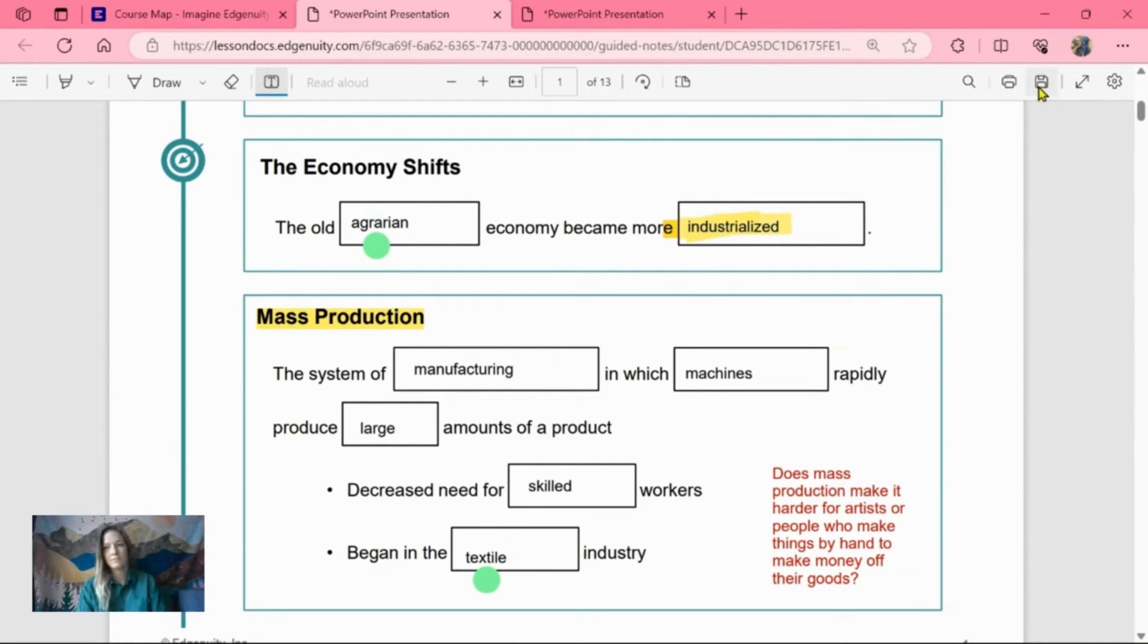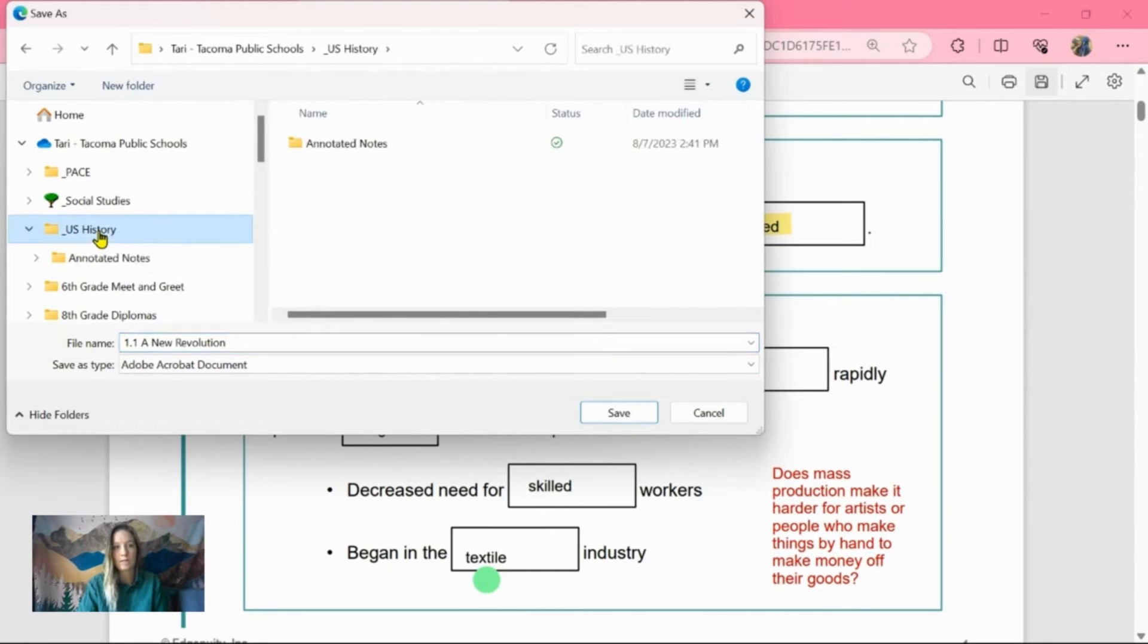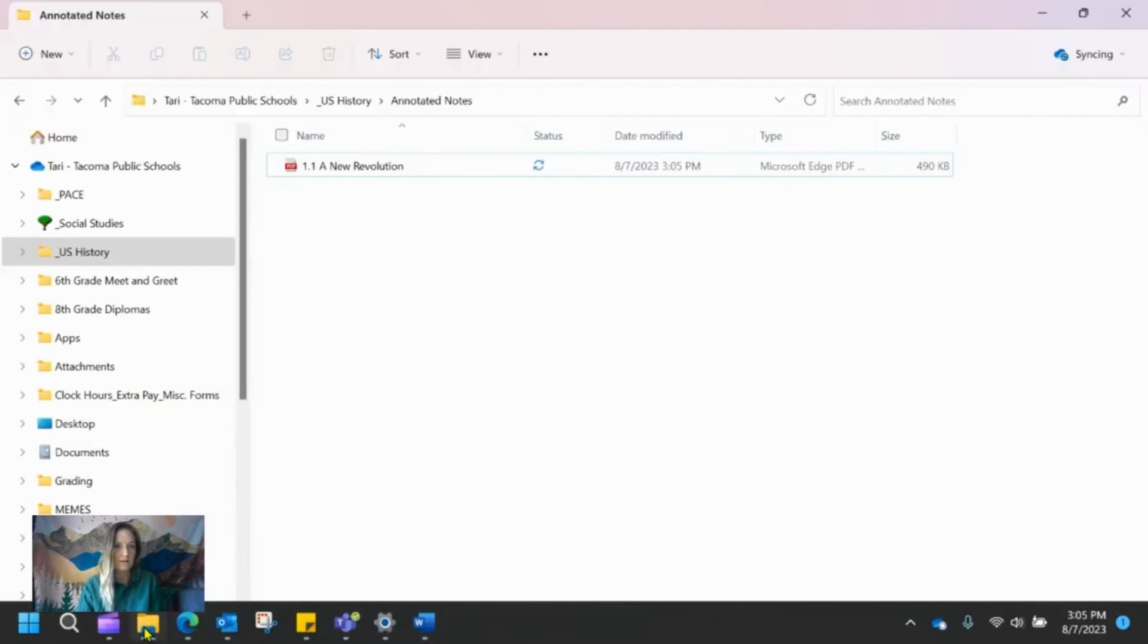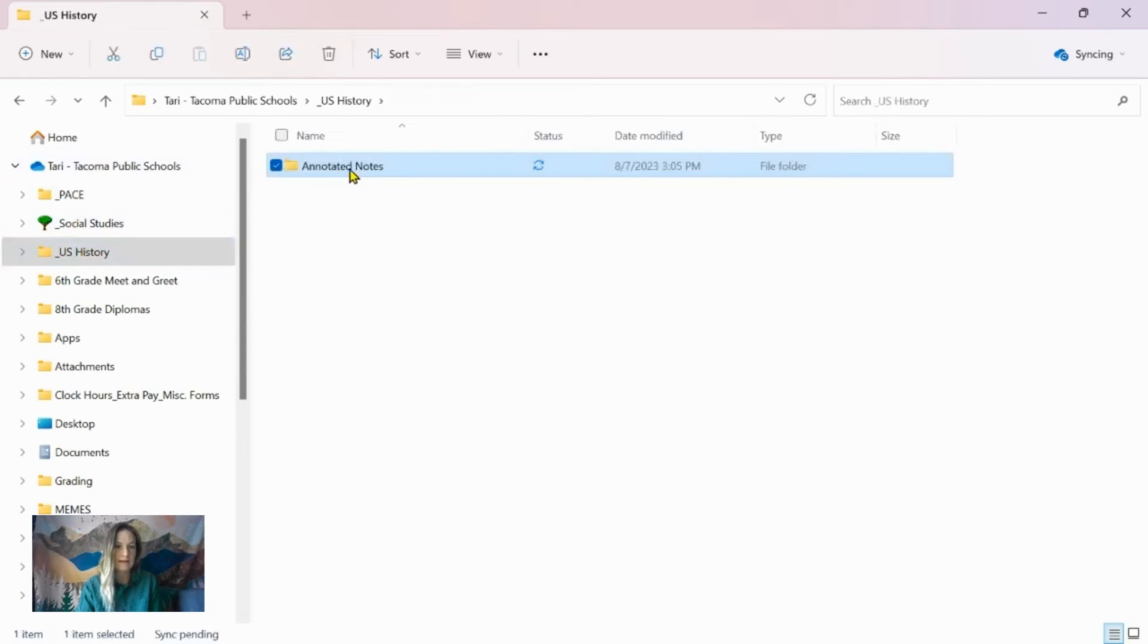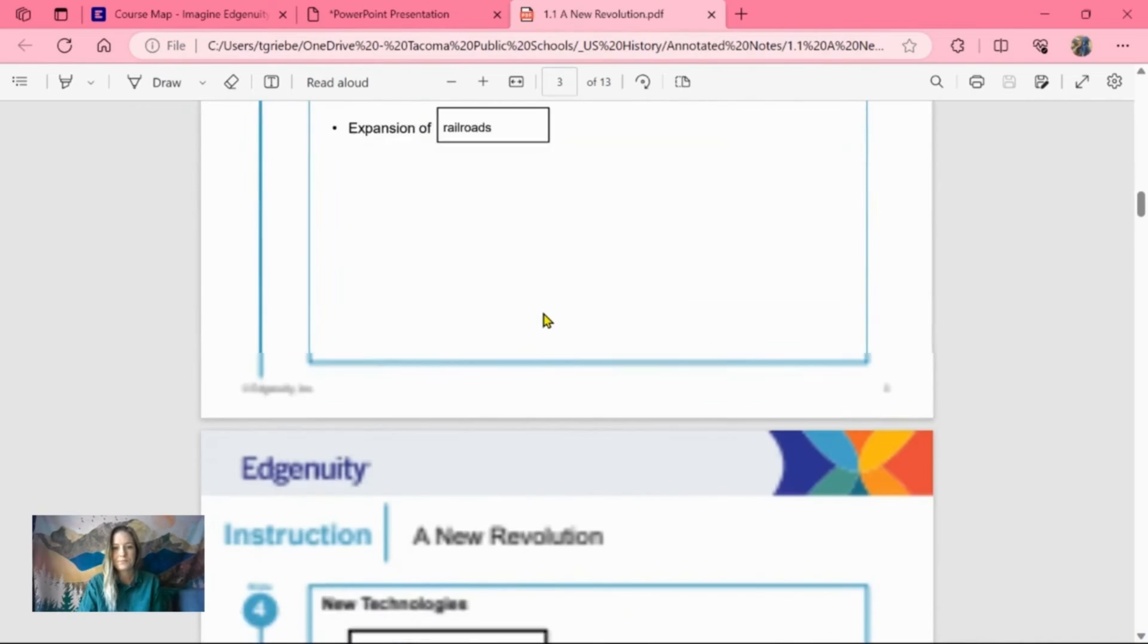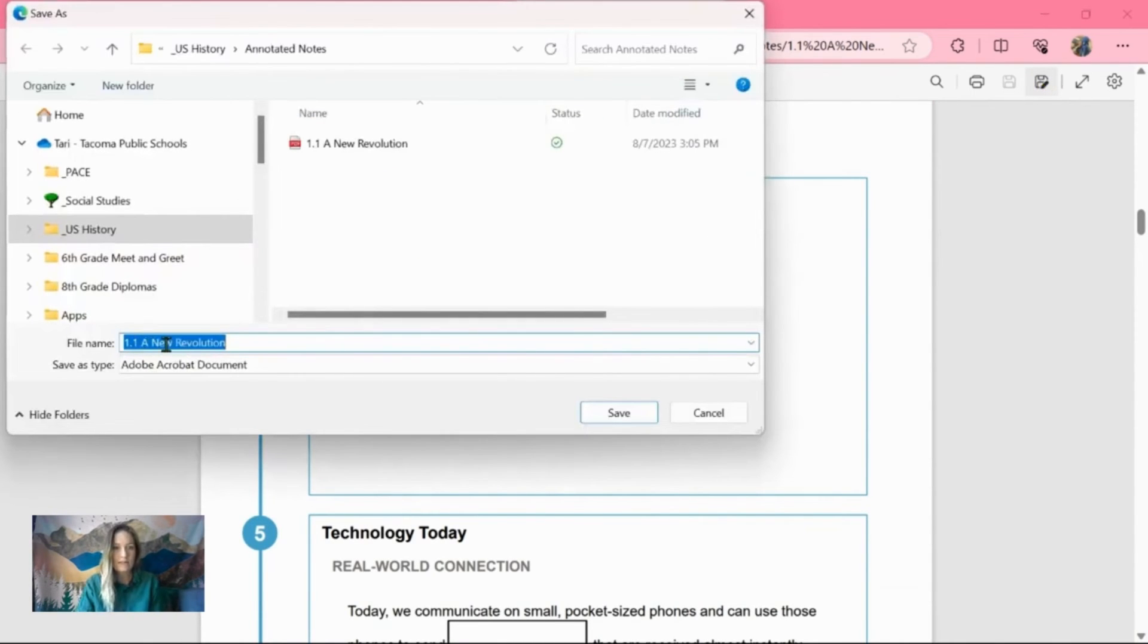Click save. I recommend changing the title because that's a lot of random words and letters. So we're going to call it 1.1, a new revolution. And I have a US history folder and I've created an annotated notes folder within that. If you don't have something like this, you just hit new folder and title it whatever you want. And voila, I can officially exit out of my guided notes, go to my files, go to US history, annotated notes. And here's my document that I made edits to. Let's say I go back and I continue to fill out my guided notes because I'm not done yet. When I make changes or updates, I have to save again. Like this, it already gives me the title that I created. Save. It says it already exists, but I've made updates to it and I've kept the title the same. So yes, I want to replace it. This is just updating it to my new version that I updated.